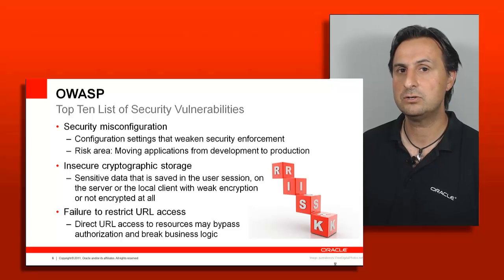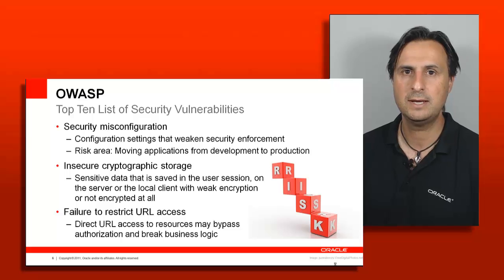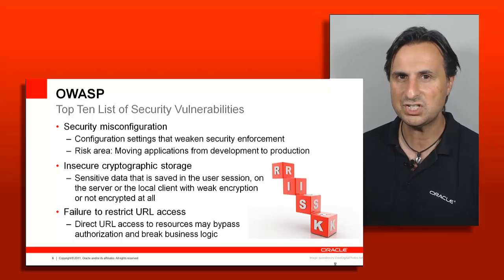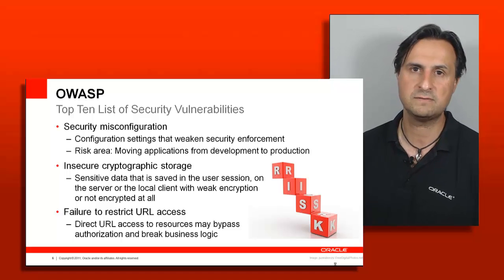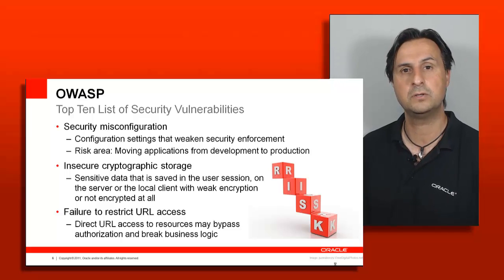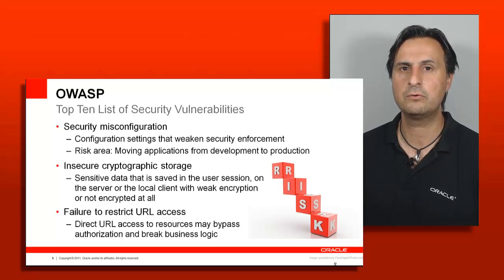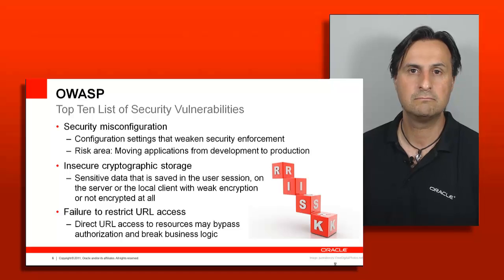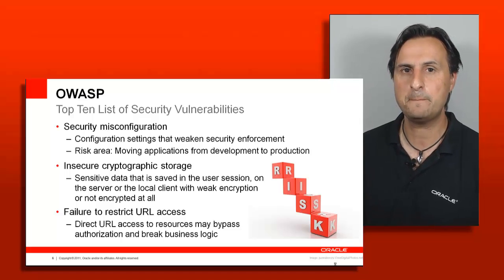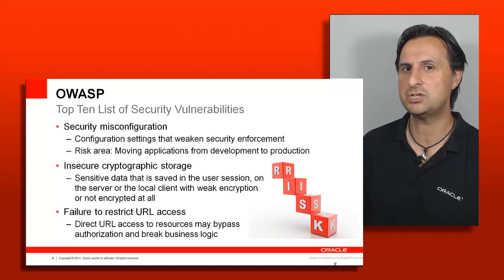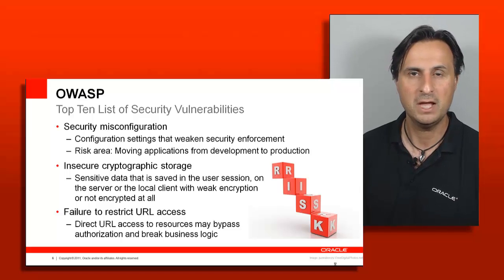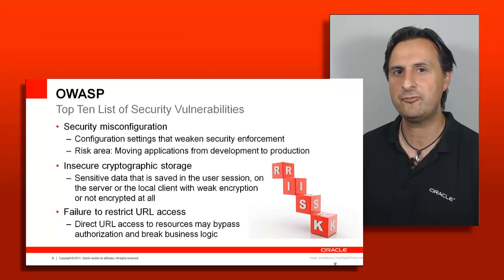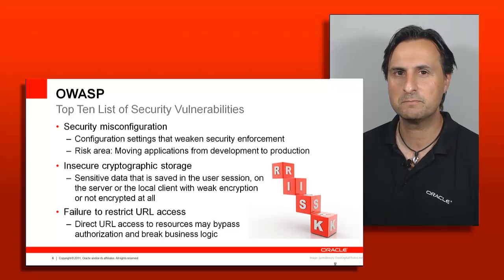The next is failure to restrict URL access. Every web document is referenced by URL. In JavaServer Faces, the faces-config file defines navigation cases from one view to the next, and each view can be directly accessed via URL. If you know the URL of a second page, you can go straight there. If security is not enforced on that page — if you only enforce it on the main page assuming everyone enters there — you can bypass authentication. ADF has mechanisms to prevent all of this, which we'll discuss in upcoming recordings, so ADF users are largely protected out of the box.